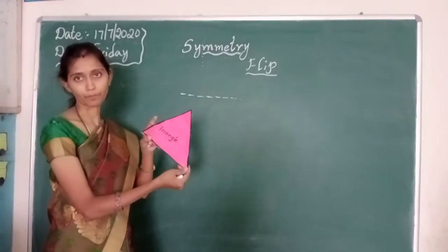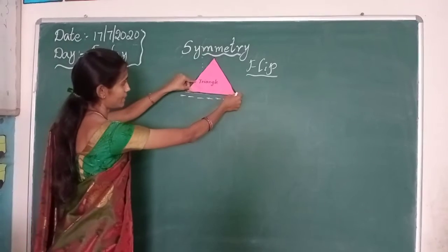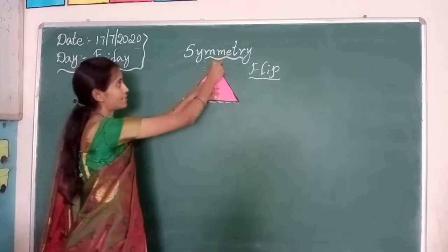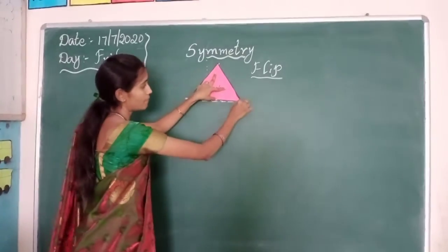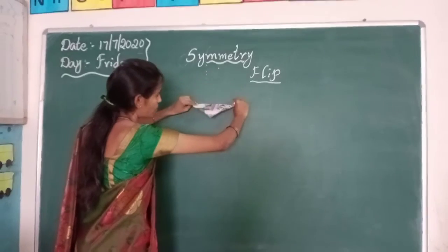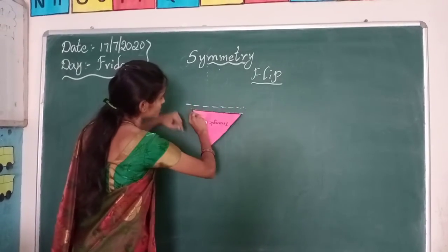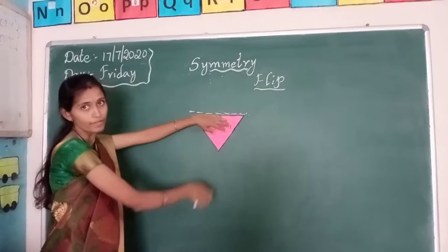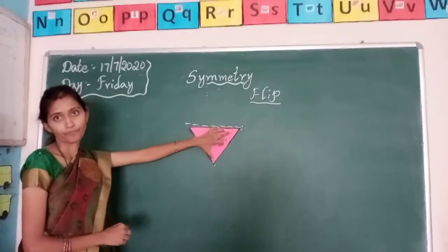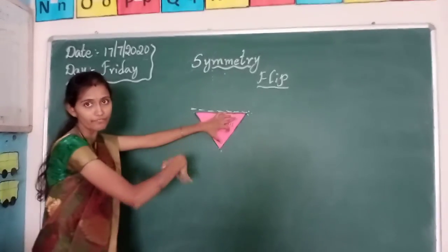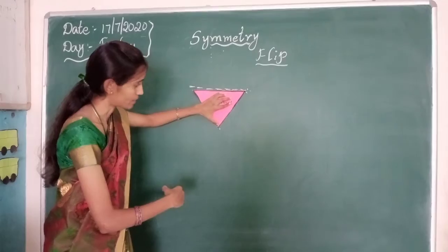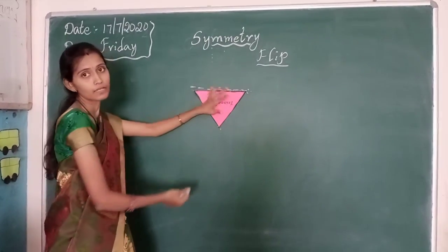This is a shape of a triangle. If I flip a triangle shape on this line — this is my top and this is my bottom. If I flip a figure downwards, what do you observe? The top becomes bottom and the bottom becomes the top. So if I flip a figure in the horizontal way, top becomes bottom and the bottom becomes the top.